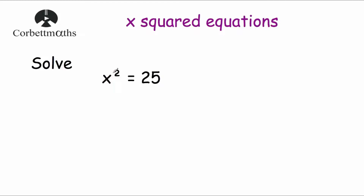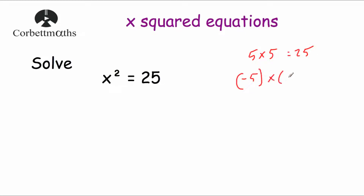Also remember that whenever we multiply a negative number by itself, that's also positive. So if we had negative 5 multiplied by negative 5 — well, 5 times 5 is 25, and negative 5 times negative 5 is also equal to 25, because a negative times a negative is a positive.